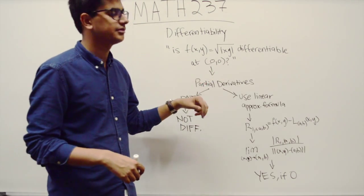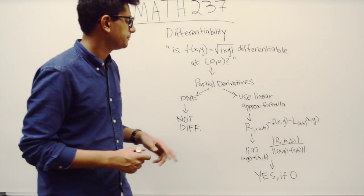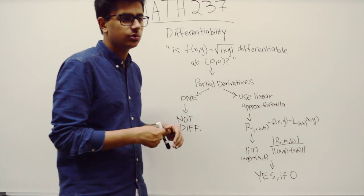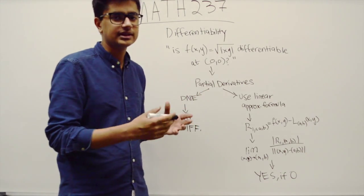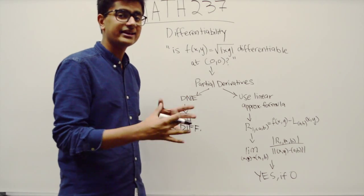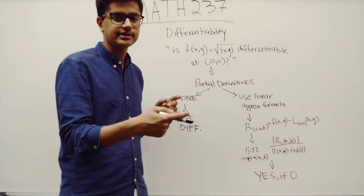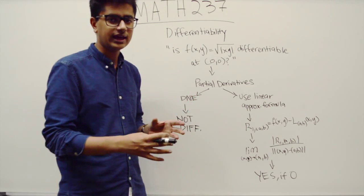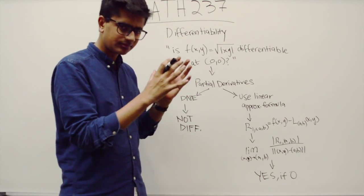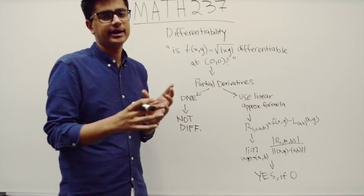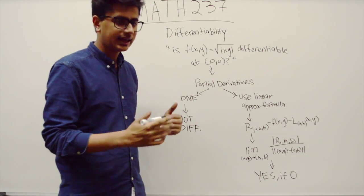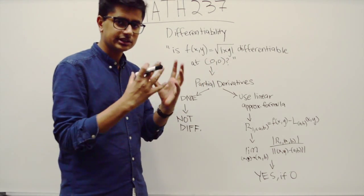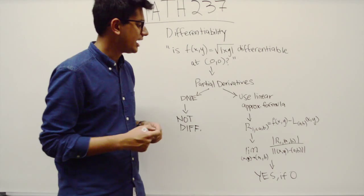If you find partial derivatives at these two points, the thing you need to do is use the linear approximation formula: f(a,b) plus partial derivative of f with respect to x evaluated at (a,b) times (x-a), plus the partial derivative of f with respect to y evaluated at (a,b) times (y-b). Using that formula, plug in all the values and get your linear approximation.